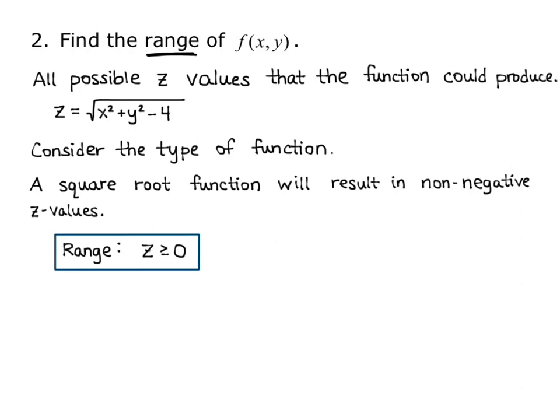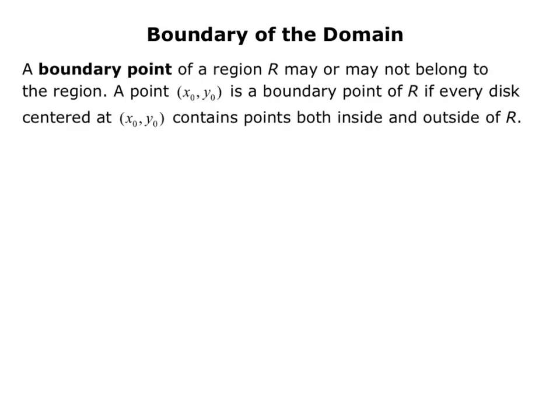Next, we're going to talk about different properties that the domain might have. We'll start with the boundary of the domain. A boundary point of a region R may or may not belong to the region.